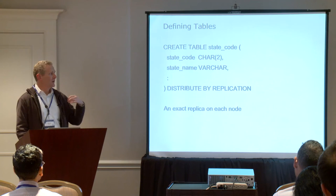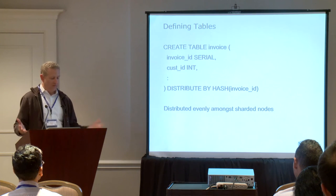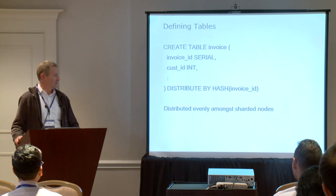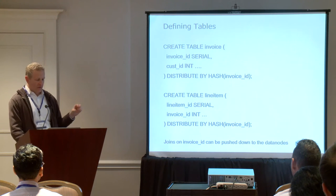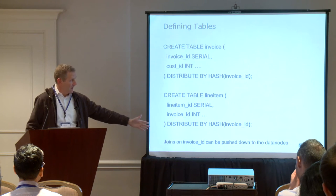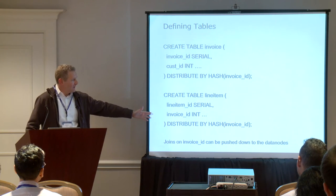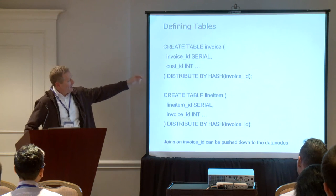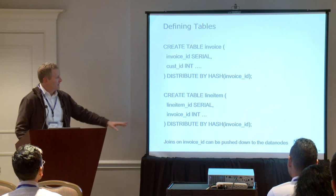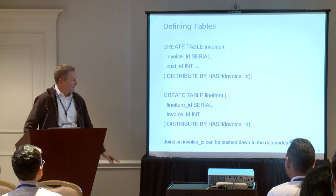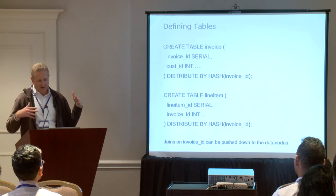For example, for a state code table you want to replicate on every node — just add DISTRIBUTE BY REPLICATION at the end of it. Say you had an invoice table with many invoices — you could hash distribute by invoice ID and you'll end up with a pretty even distribution across all the nodes. As a more complex example, if you had line items for invoices, you might distribute line items by the foreign key of invoice ID. That way, whenever we run queries that join these two tables together, it's just going to push that join down.